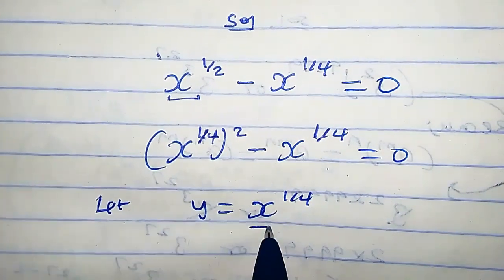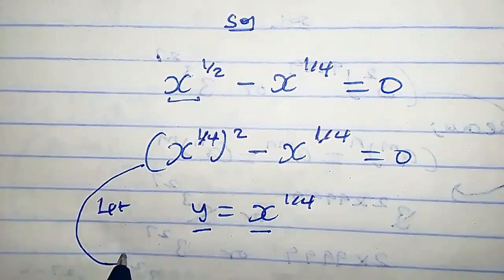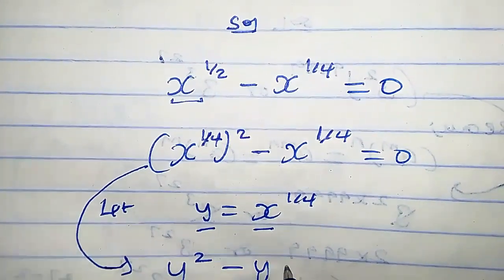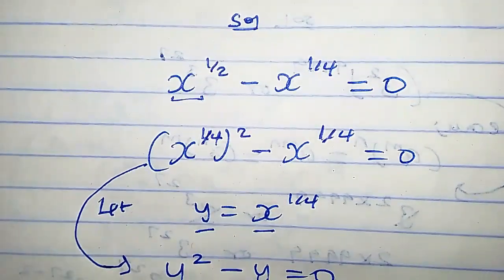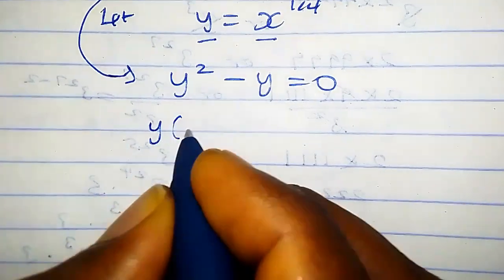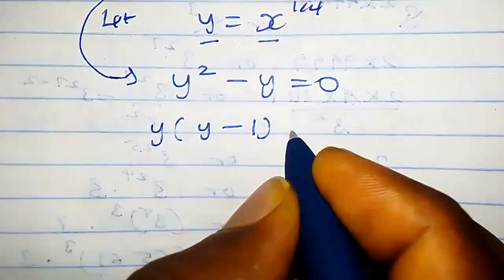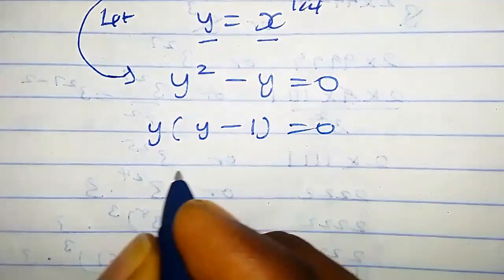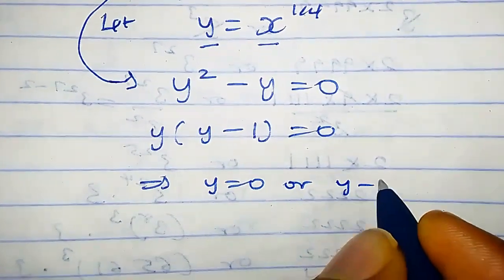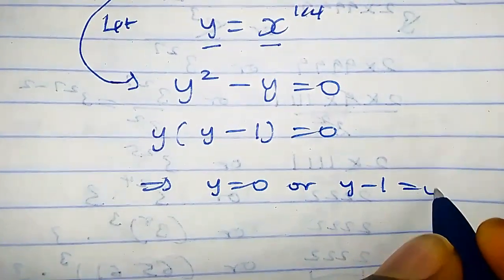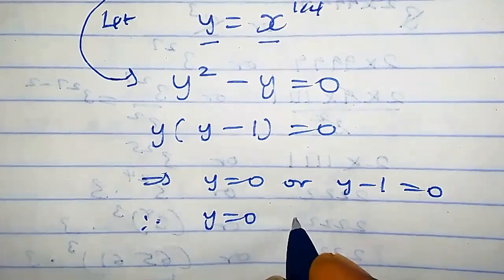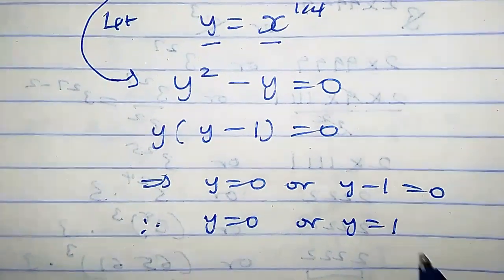Replacing with the substitution, we get y squared minus y equals zero. y is common, so we factor it: y times (y minus one) equals zero. This implies y equals zero or y minus one equals zero, so y equals zero or y equals one.